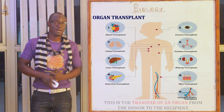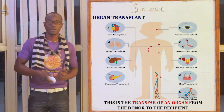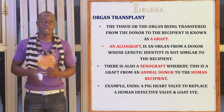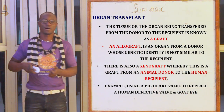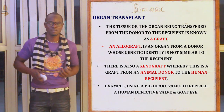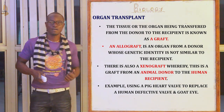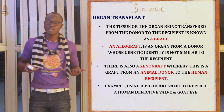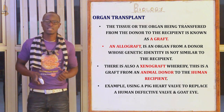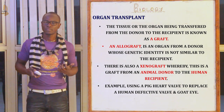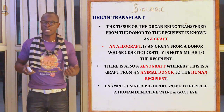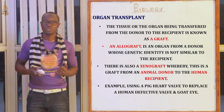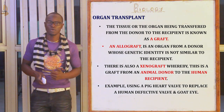Let's now look at organ transplant, which is the transfer of an organ from the donor to the recipient. The tissue of the organ being transferred is known as the graft. An allograft is an organ from a donor whose genetic identity is exactly similar to that of the recipient. A xenograft is a graft from an animal donor to a human recipient. For example, using the valve from the heart of a pig and transplanting it to the human heart, or when an eye from an animal is transplanted to a human being.